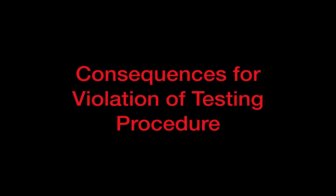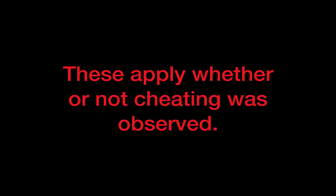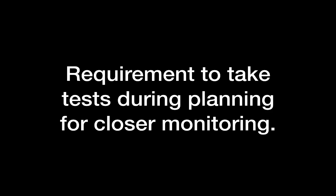Consequences for a violation of testing procedure — these apply whether or not cheating was observed: a grade of zero on the test, parent contact, formal referral to the office, requirement to take tests during planning for closer monitoring.